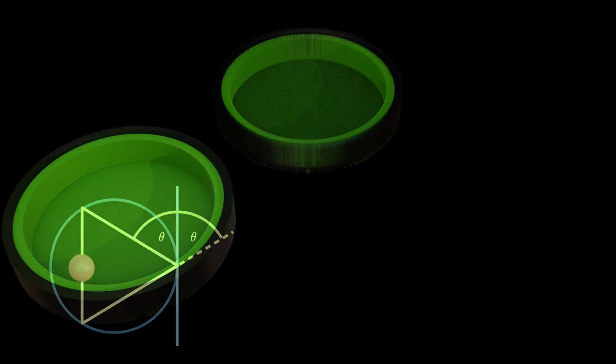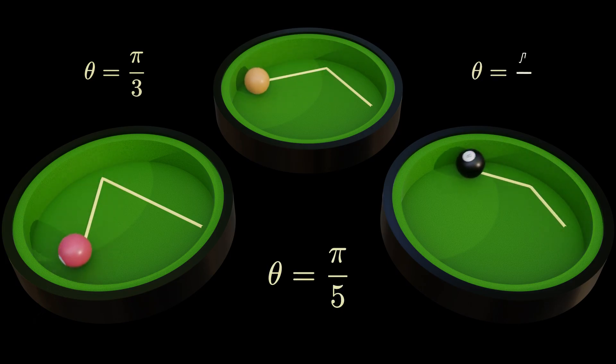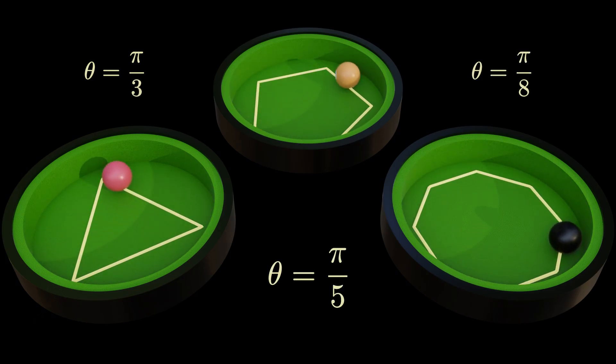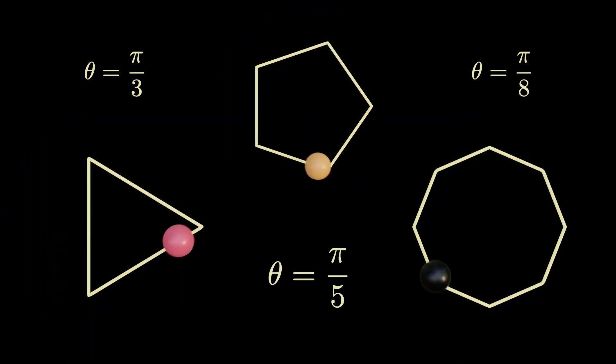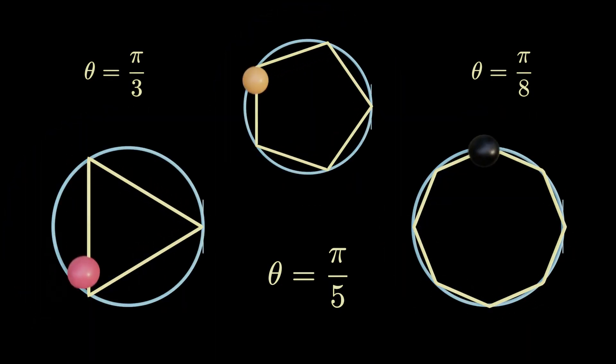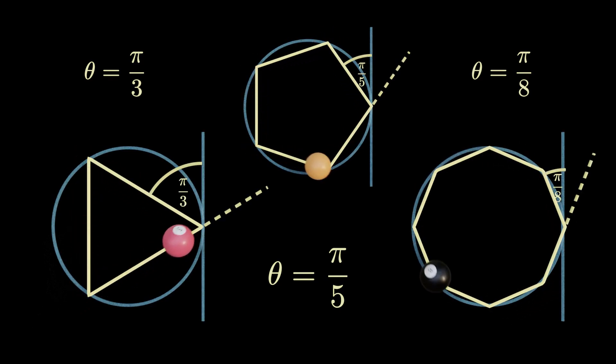In the simplest situation, the ball traces the shape of a regular n-gon. We find that 2 times n times theta is equal to 2 pi and the trajectory closes after n reflections. We say that theta is a rational multiple of pi.